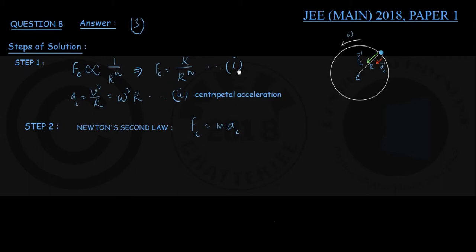Now using equation number 1 and 2 and putting the values of Fc and Ac, we can write Fc is k by r to the power n, that is equal to m into omega squared into r. That is my equation number 3.